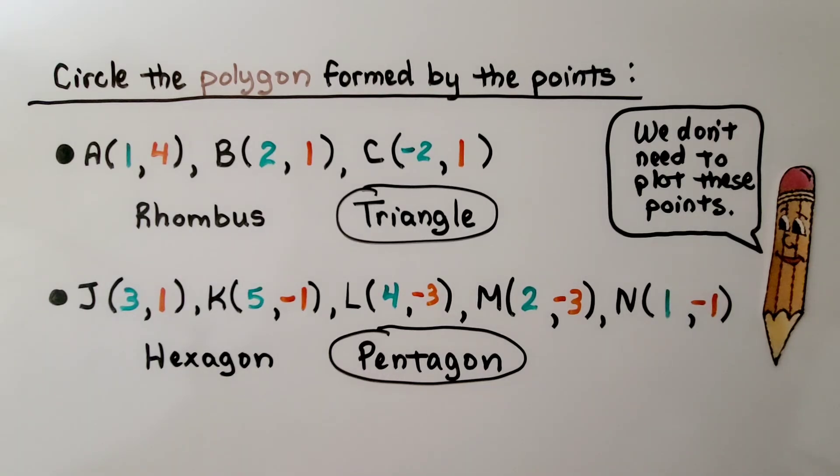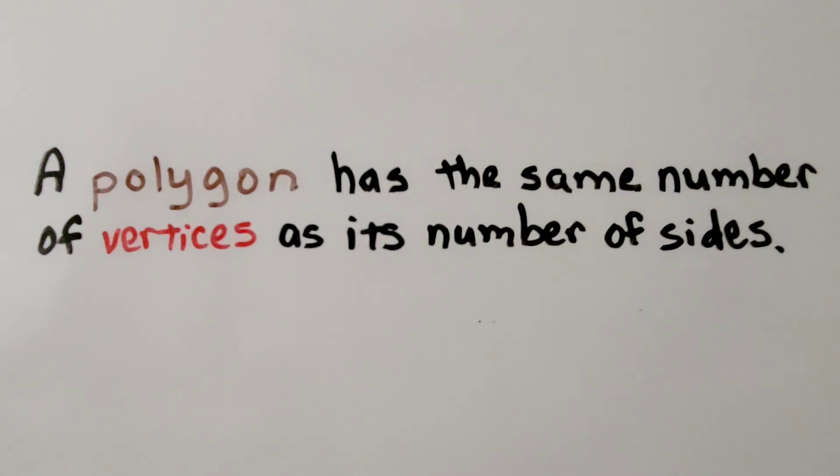So, each ordered pair is a vertex. We can count the points, or sets of ordered pairs, to classify a polygon. A polygon has the same number of vertices as its number of sides.